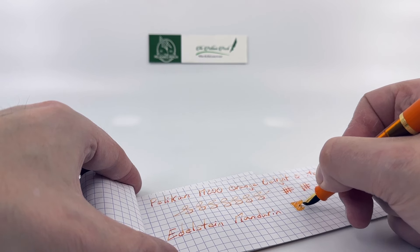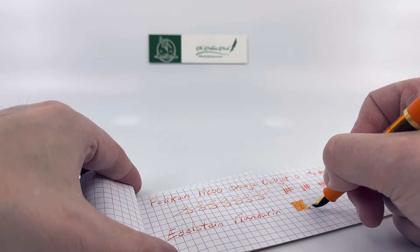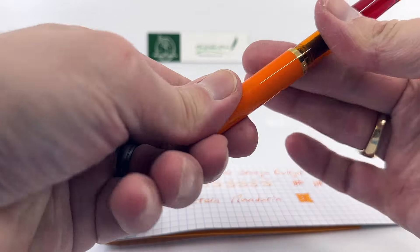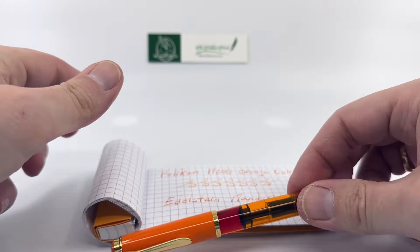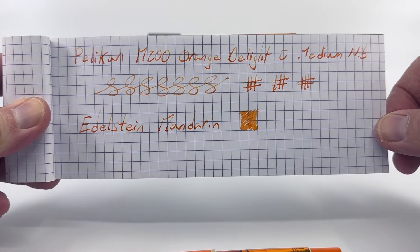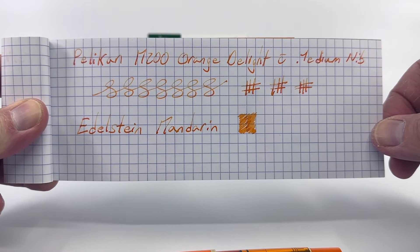With this medium nib you do get a little bit of shading with that which is kind of nice. That's just been a brief look at a writing sample from Pelican's M200 Orange Delight.